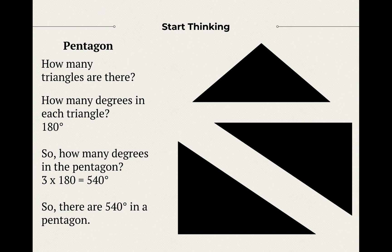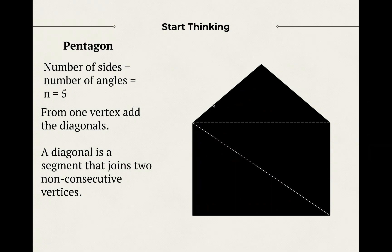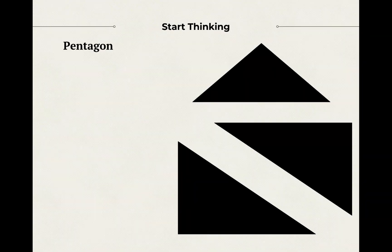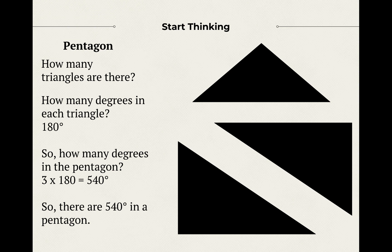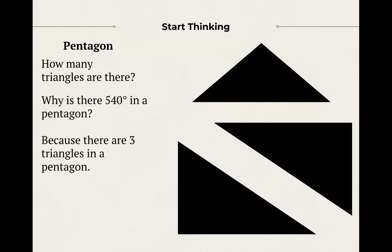So that tells us there are 540 degrees inside of a convex pentagon. If I put these pieces back together, the sum of the interior angles of a convex pentagon equals 540 degrees. How did I do that? I just think about how many triangles there are. Why is there 540 degrees in a pentagon? Because there are three triangles. This is what I want you to relate today's lesson to — previous lessons on triangles. We're going to break these complex shapes down into smaller shapes that you've already mastered.